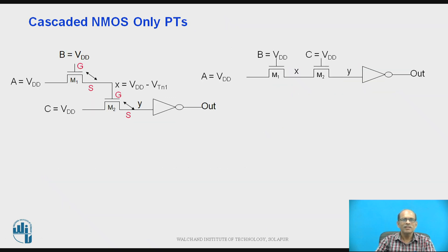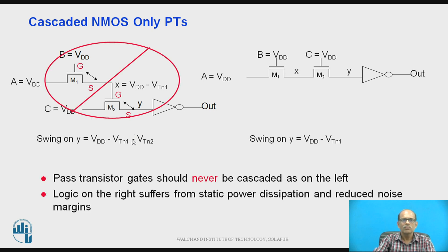So the voltage drop is worse and it is given by the formula φX as shown in figure. So these are the cascaded NMOS only pass transistors. Now first type of connection is not recommended because in this first the swing is VDD minus VTN1 minus VTN2 and in second is better than the first.